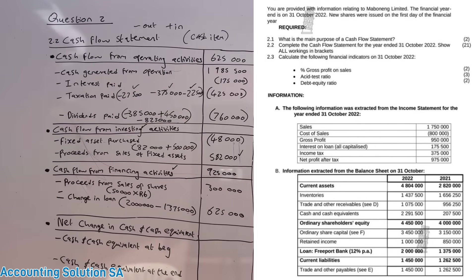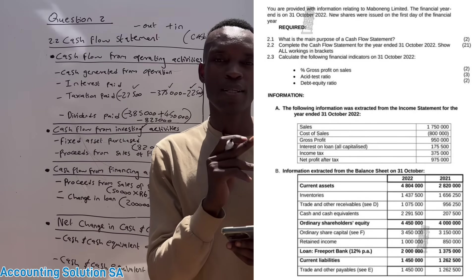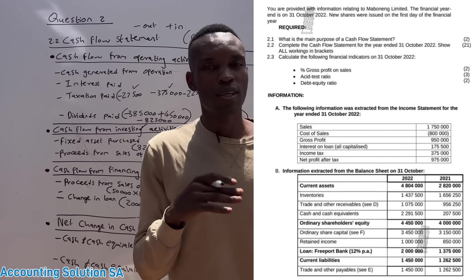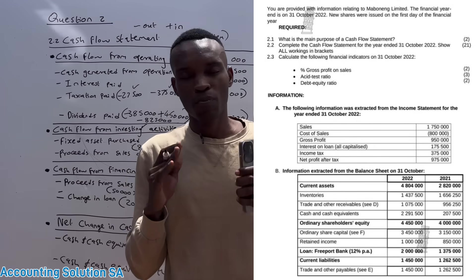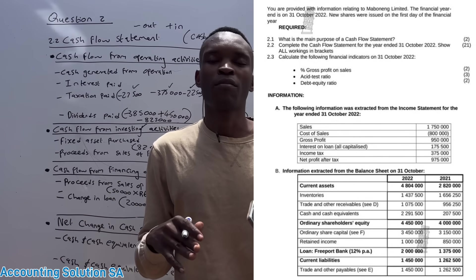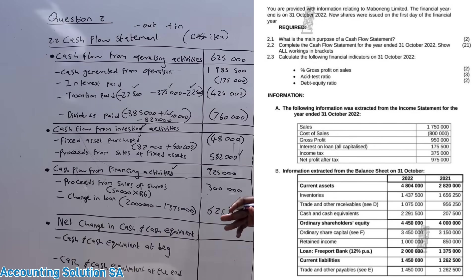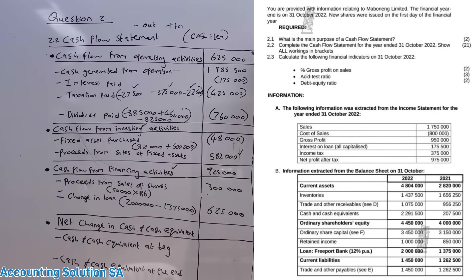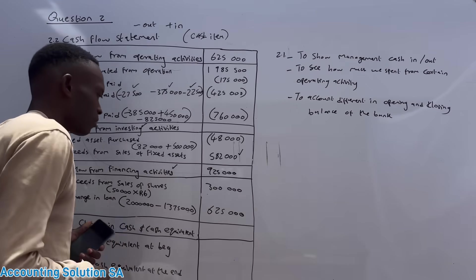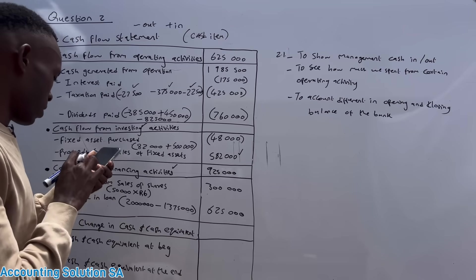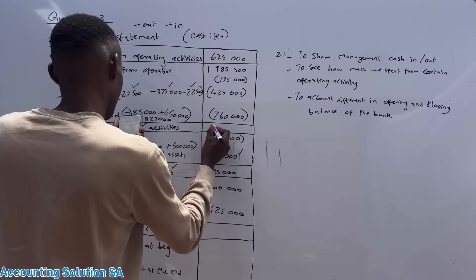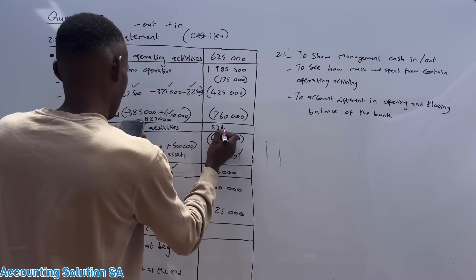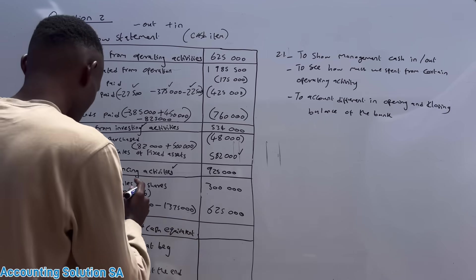The total for financing activities is 925,000, as there are no other transactions in the question paper. The last part is net change in cash and cash equivalents. You take all the totals from operating activities, investing activities, and financing activities and add them together — subtracting where there is a minus. The investing activity total was 534,000. Combining all three gives a net change of 2,084,000.